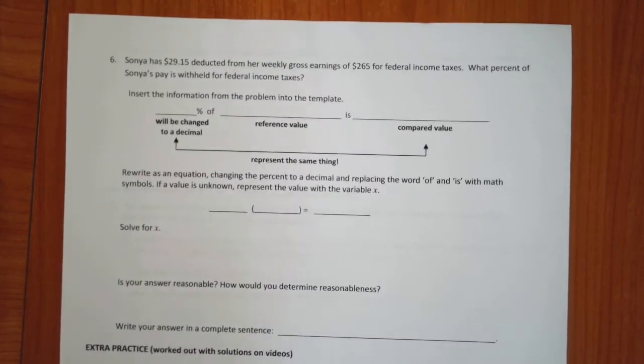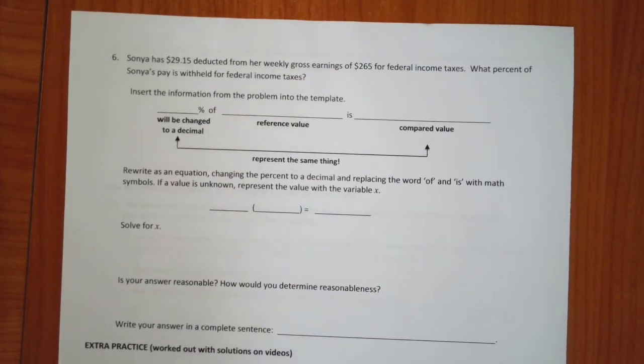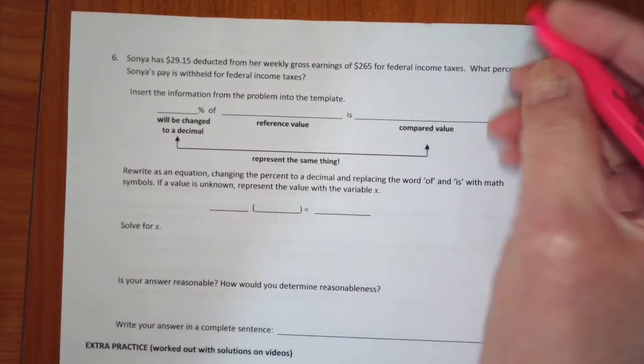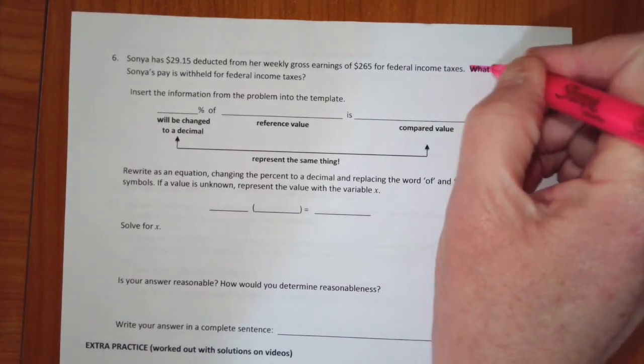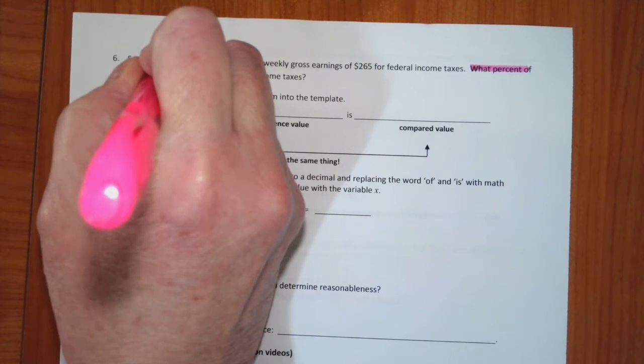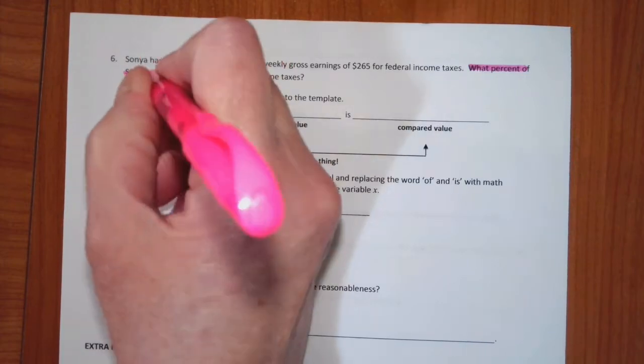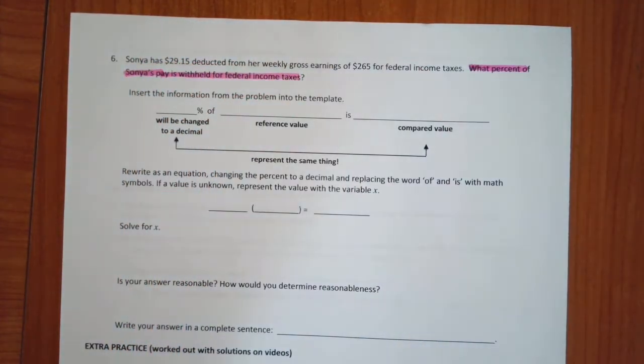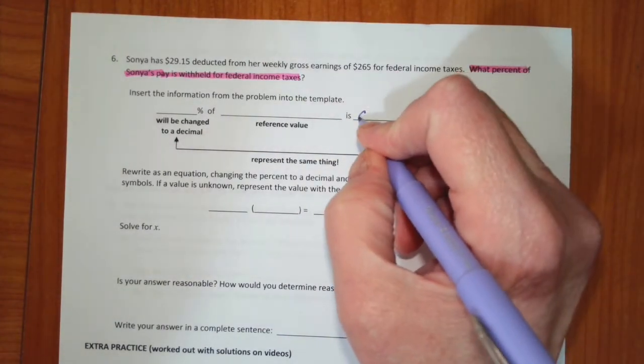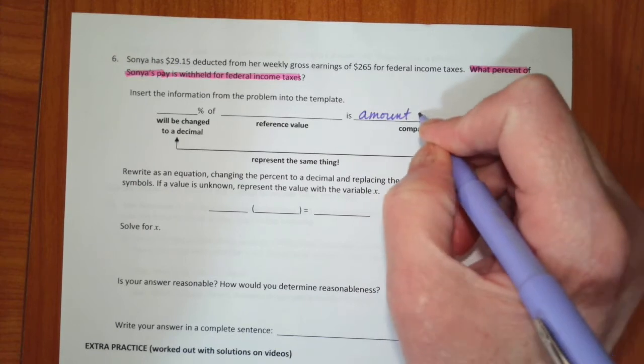Okay, let's go ahead and continue on with this. Our next problem, number six, is Sonia has $29.15 deducted from her weekly gross earnings of $265 for federal income taxes. What percent of Sonia's pay is withheld for federal income tax? That's what they want to know. So that means the amount that is withheld is going to be our compared value.